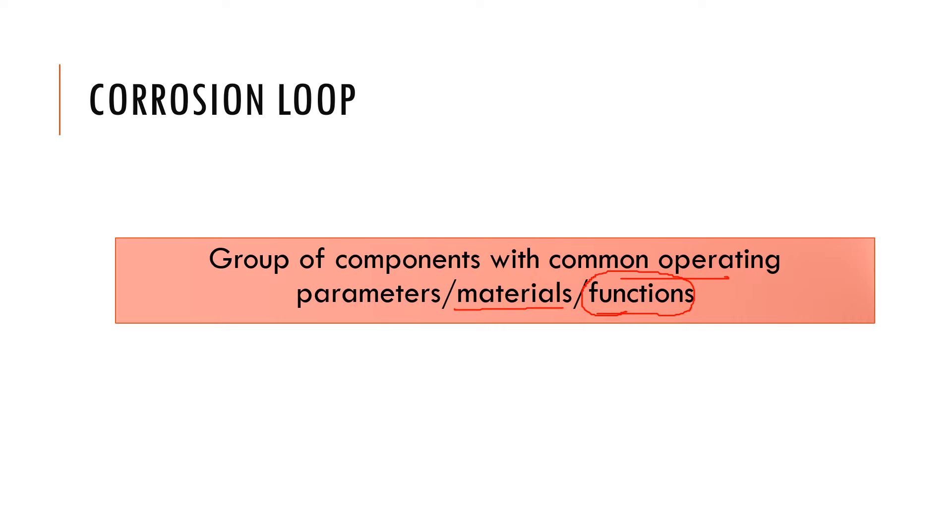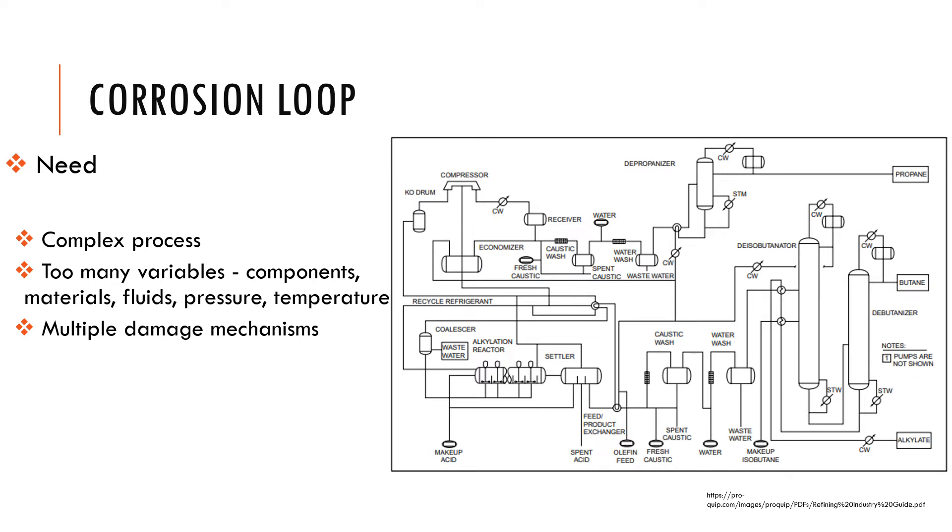So how is it viewed in operation, or rather, why do we need it? A corrosion loop is used in complex processes involved in refining.